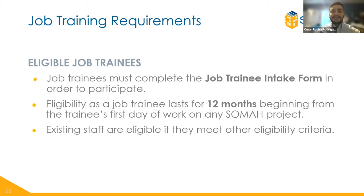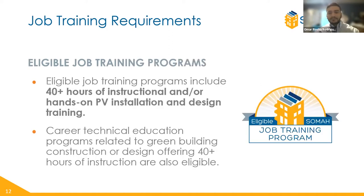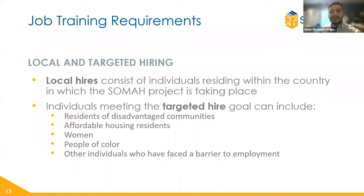Contractors may have existing staff who meet the job training definition — these individuals are eligible to participate as SOMA job trainees as long as they meet the three eligibility criteria. Eligible job training programs include 40 hours or more of instructional or hands-on PV installation and design training offered by California community colleges, local government workforce development programs, community nonprofits, private enterprises, and electrical worker unions. Career technical education programs related to green building construction or design offering 40 hours or more of instruction are also eligible. Local and targeted hiring guidelines are designed to ensure that jobs are directed to residents or individuals who need them most. While not required, it is strongly encouraged.